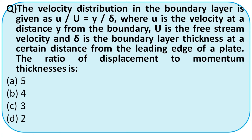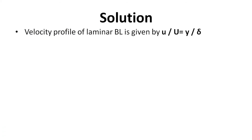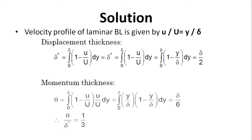The velocity distribution in a boundary layer is given as u/u∞ = y/δ. The question asks for the ratio of displacement thickness to momentum thickness. Using the linear profile: displacement thickness δ* = δ/2, and momentum thickness θ = δ/6 by substituting and integrating. Therefore δ*/θ = 3. The right option is option C.